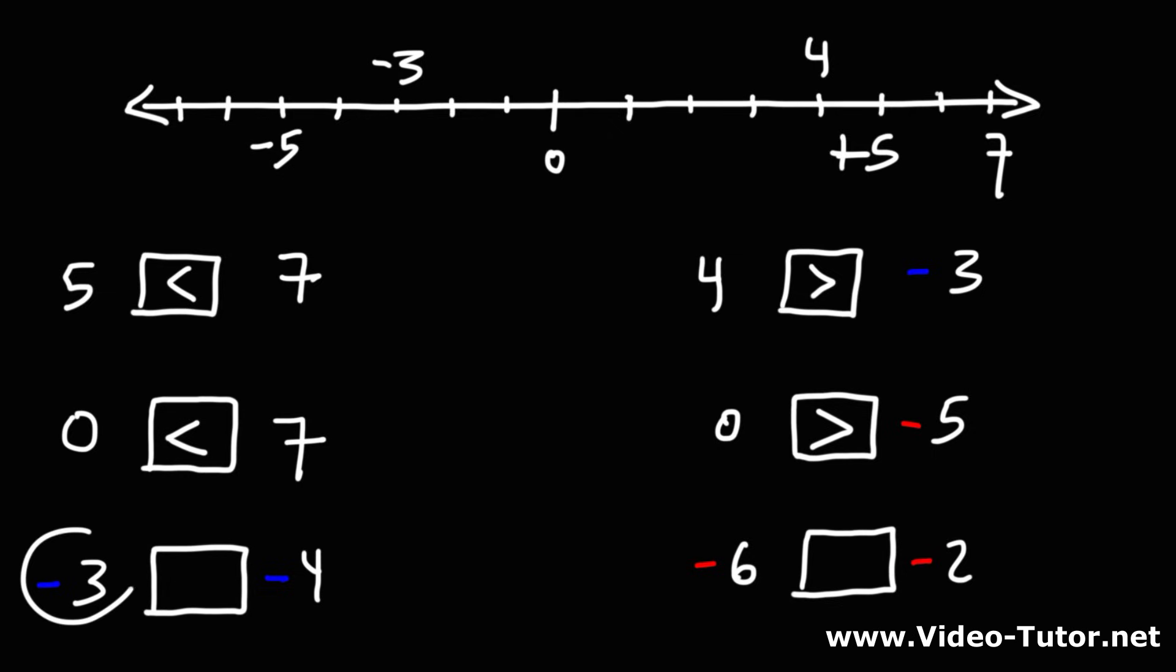What about negative 3 and negative 4? Which one is greater? So here is negative 3. Negative 4 is to the left of it. So because negative 3 is to the right of negative 4 on a number line, negative 3 is greater. So we need to write it like this. Negative 3 is greater than negative 4, or negative 4 is less than negative 3.